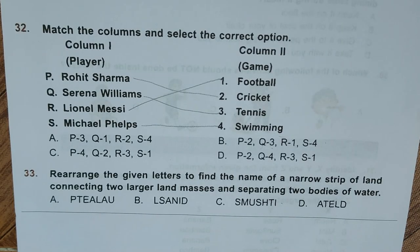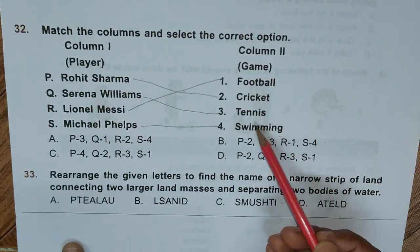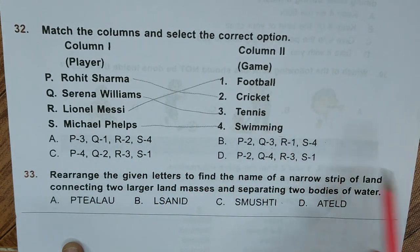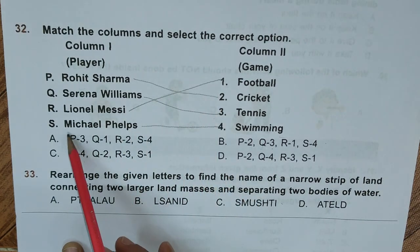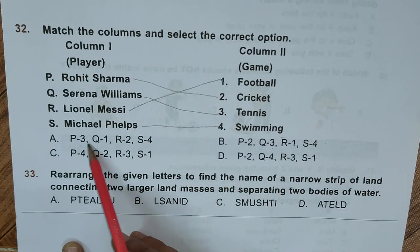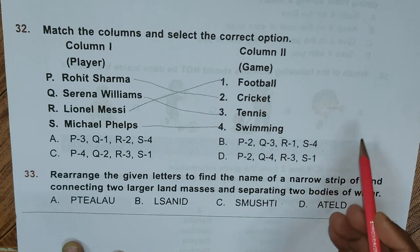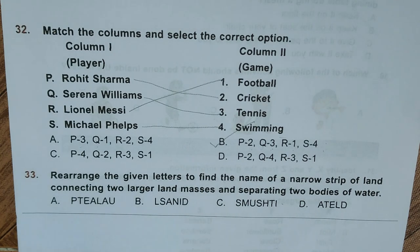Question 32: Match the following and select the correct option. Column 1 has player names, Column 2 has game names. P. Rohit Sharma — Cricket; Q. Serena Williams — Tennis; R. Lionel Messi — Football; S. Michael Phelps — Swimming. So P=2, Q=3, R=1, S=4. Correct answer is option B: P2, Q3, R1, S4.